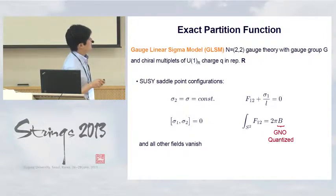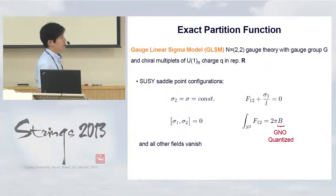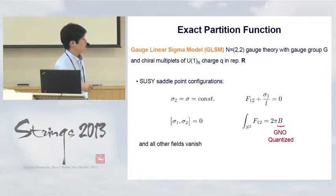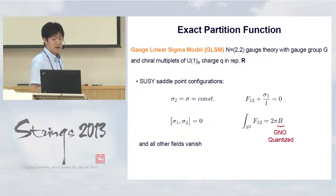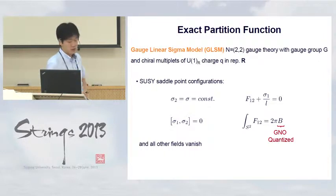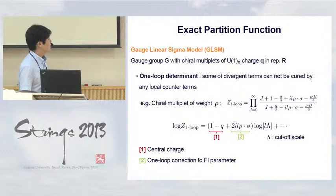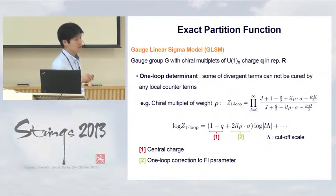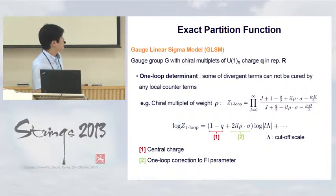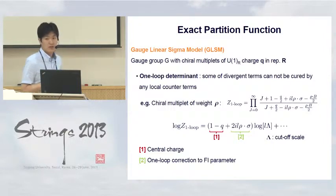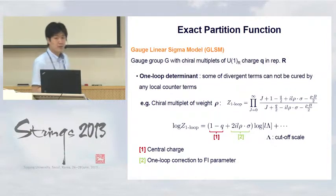For the supersymmetric gauge theory with arbitrary gauge group coupled to chiral multiplets in representation R, the supersymmetric saddle points are described as follows: σ₂ and σ₁ are two real scalars in the vector multiplet, one of which can take an arbitrary constant value on the two-sphere, and the other satisfies quantization conditions for the field strength, with all other fields vanishing. The one-loop determinant is in general divergent and must be regularized carefully, since some divergences have definite physical meaning. For instance, the one-loop determinant from the chiral multiplet of charge ρ gives a logarithmic divergence whose coefficient reflects the trace anomaly.